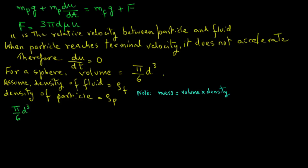We have pi over 6 d cube rho p times g, and that equals pi over 6 d cube rho f times g, plus 3 pi d mu times ut. We are using ut for the terminal velocity instead of u.